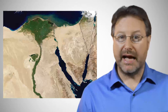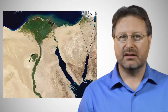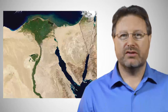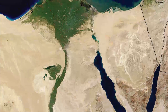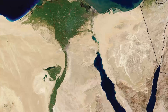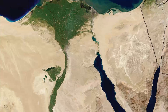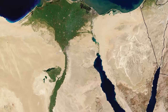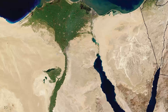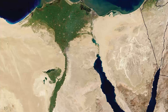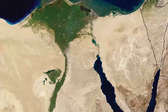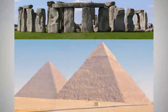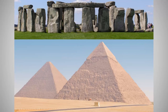Egypt was and is a desert land, its civilization restricted to a narrow ribbon along the banks of the life-giving river Nile. Just to put the civilization in context, ancient Egypt begins with the early dynastic period in about 3000 BCE. The Great Pyramid of Cheops dates to about 2560 BCE, and for comparison, the Great Monument of Stonehenge dates to about 2500 BCE.